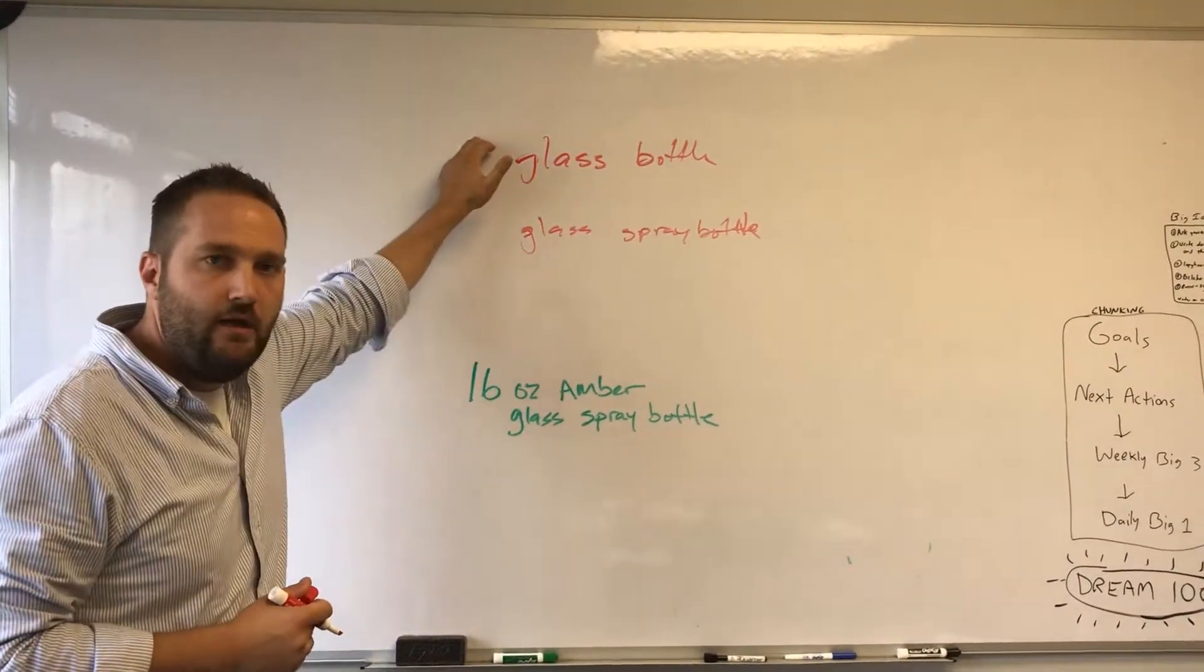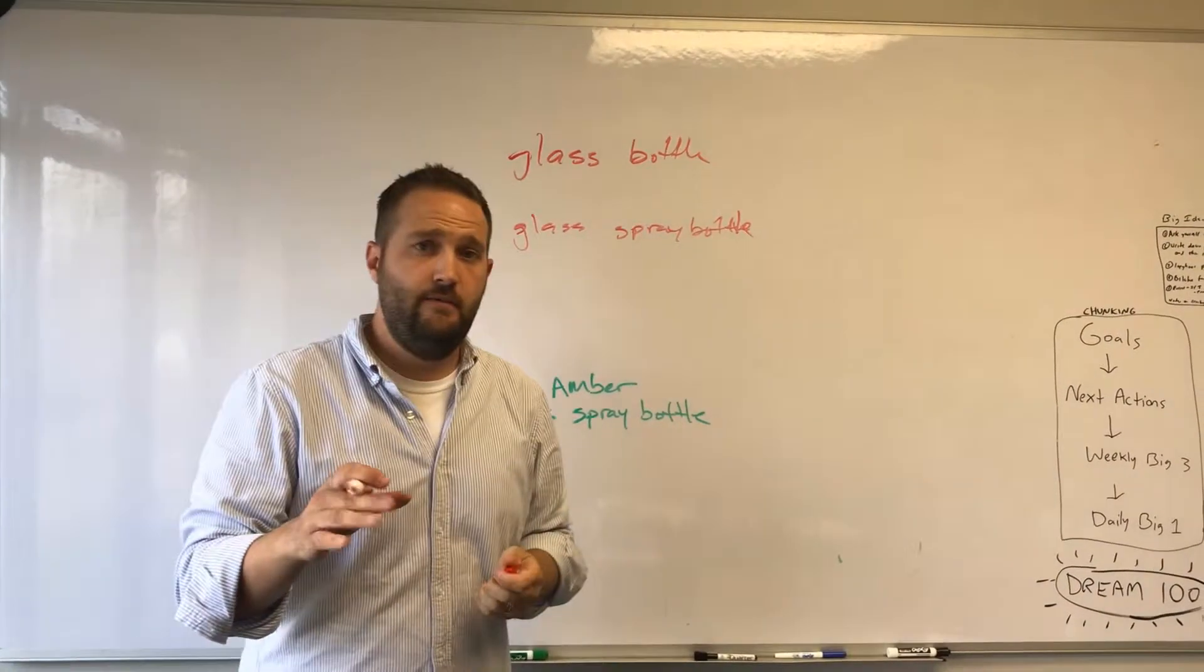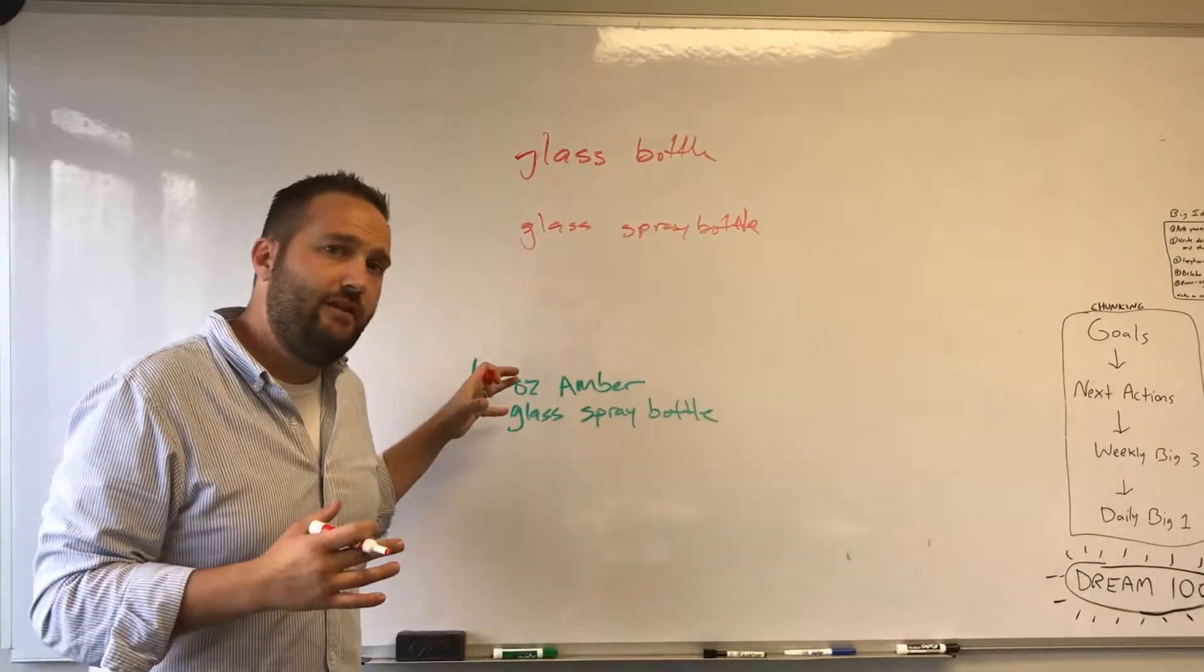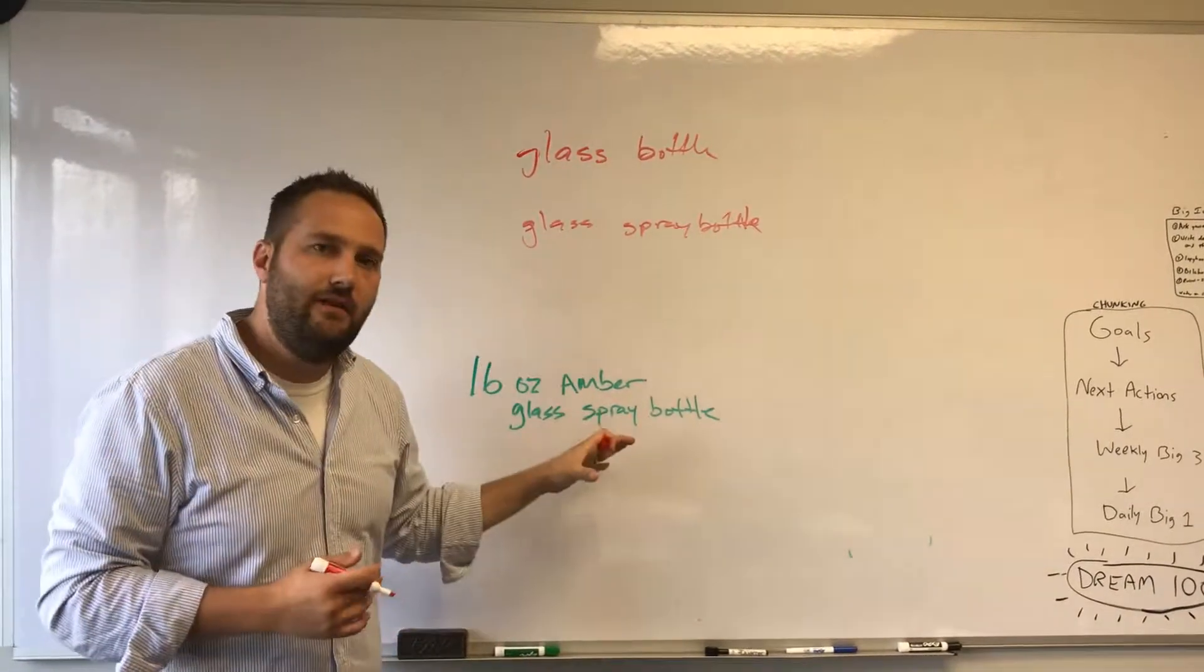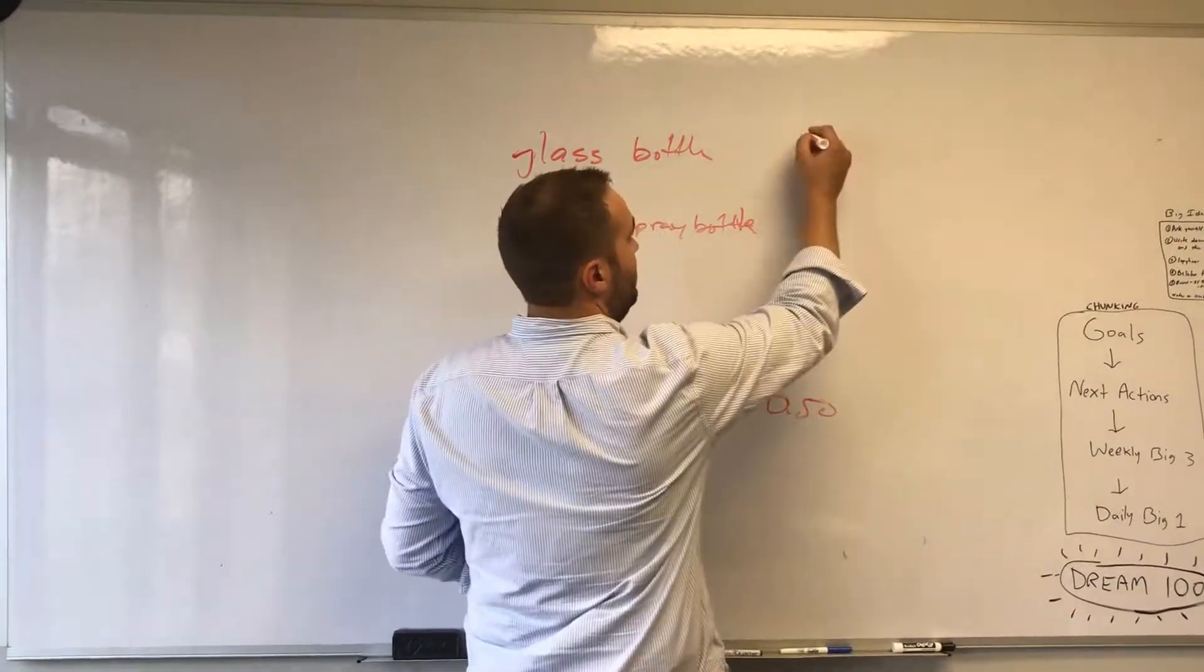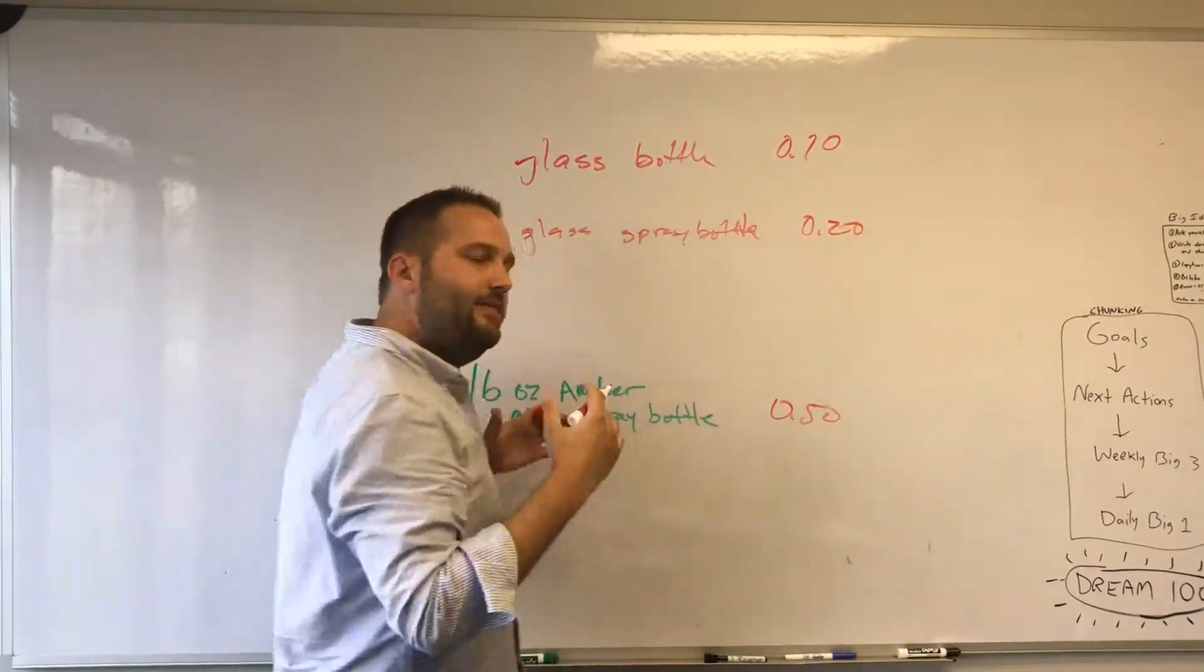The better strategy is to use keyword targeted campaigns to separate this traffic into different buckets and bid differently on these words. So let's say I want to bid 50 cents on this, 10 cents on this, and 20 cents on this. This is what gives you better results.